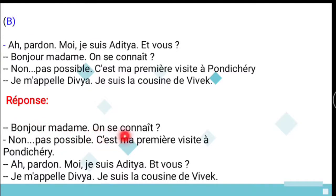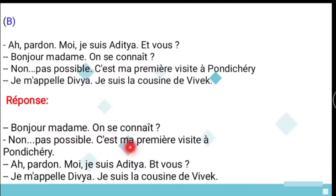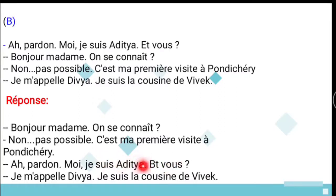For Dialogue B ordering: The question 'Est-ce qu'on se connaît?' — do we know each other? — is followed by the answer 'Non, pas possible, c'est ma première visite à Pondichéry.' This is the correct sequence for Dialogue B.